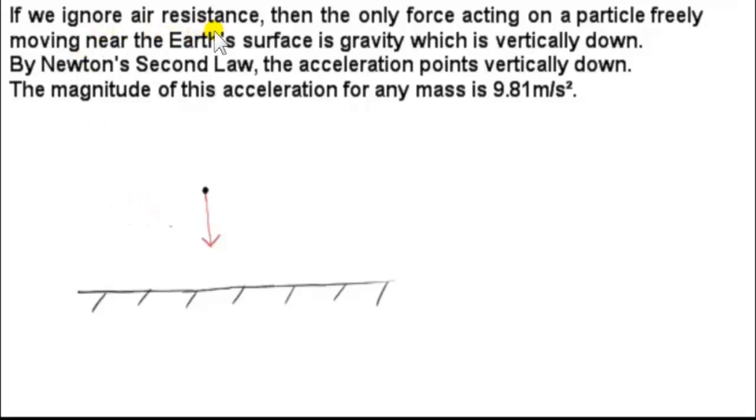If we ignore air resistance, then the only force acting on a particle freely moving near the Earth's surface is gravity, which is vertically down. Here we have a particle near the Earth's surface with no air, so air resistance is zero. The particle may have been released from rest. The force on it is towards the center of the Earth, which means the force is vertically down towards the surface.